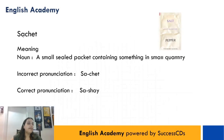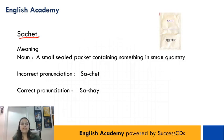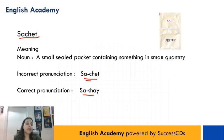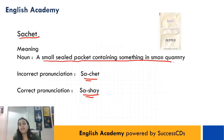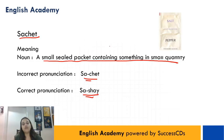The next word is S-A-C-H-E-T. Log usually isse pronounce karte hain 'sachet', but iski correct pronunciation is 'sachet'. Aur iska matlab hota hai a small sealed packet containing something in small quantity. Toh aapke wo chho'te chho'te salt, pepper, coffee ya shampoo ke 1-2 rupee ke packets hote hain, woh aapke 'sachet' hote hain, nahi 'sachet'.